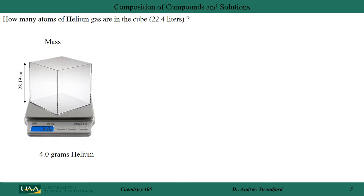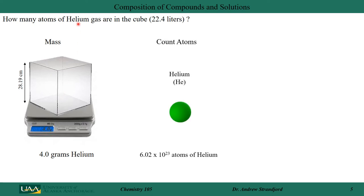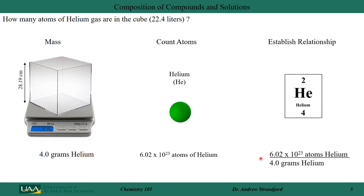Let's do another example: how many atoms of helium gas are in this cube? This cube contains approximately 22.4 liters of volume. If I measure the mass, subtracting off the mass of the container itself, I get 4 grams of helium. If I count those atoms, I get 6.02×10²³ atoms of helium in that cube on the balance. So I have 6.02×10²³ atoms in 4 grams of helium. Looking at the periodic table at the helium cell, the atomic mass is 4 — the same as the number of grams of helium we measured.